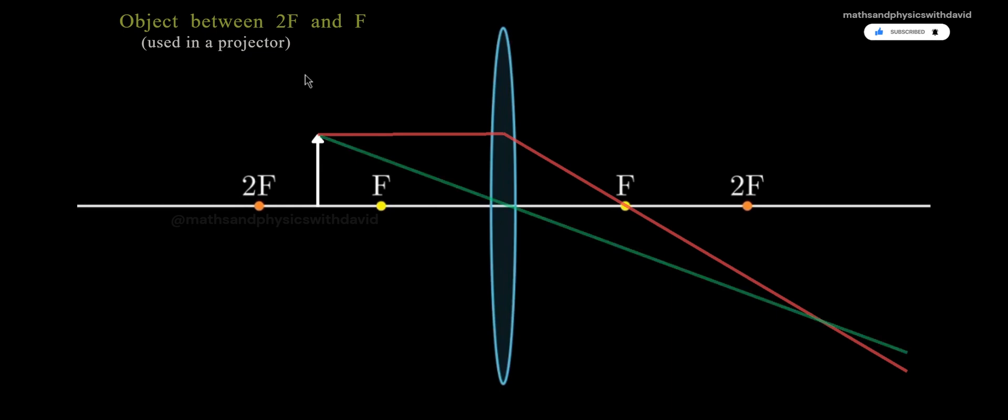These two rays meet beyond 2F. The image is real, inverted, and larger than the object.